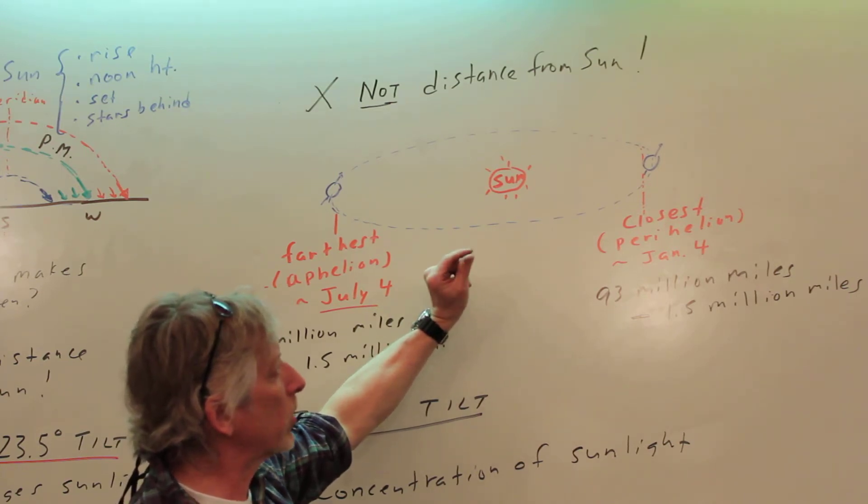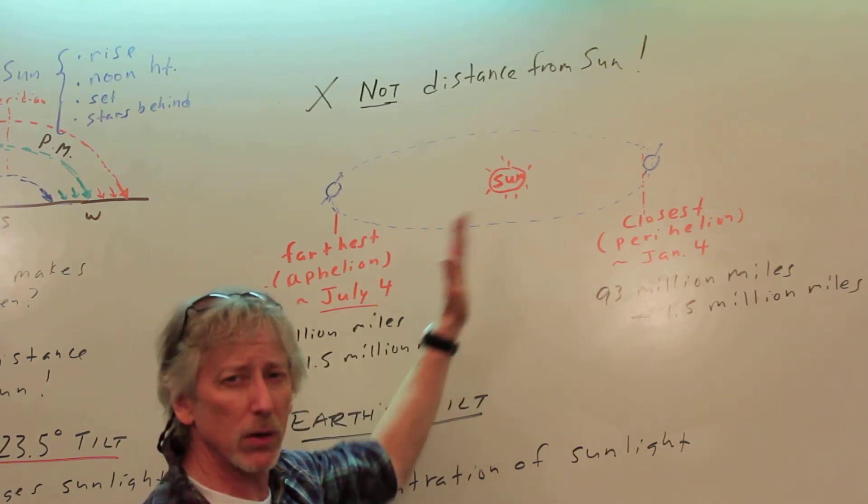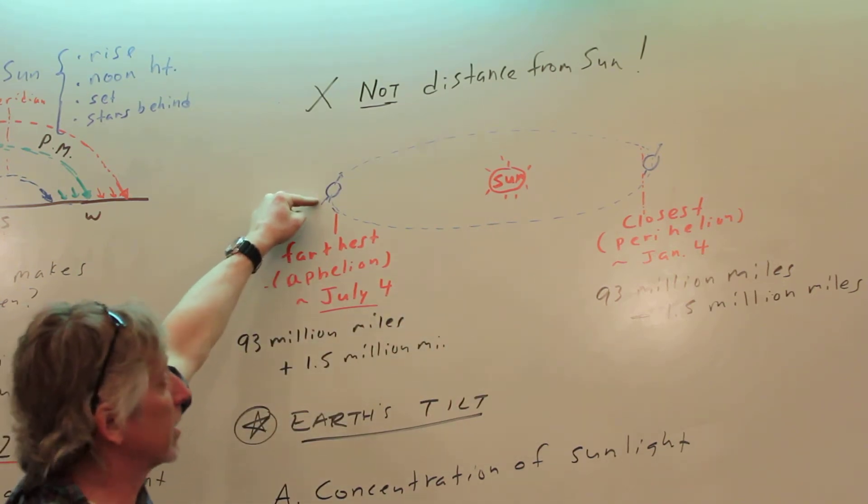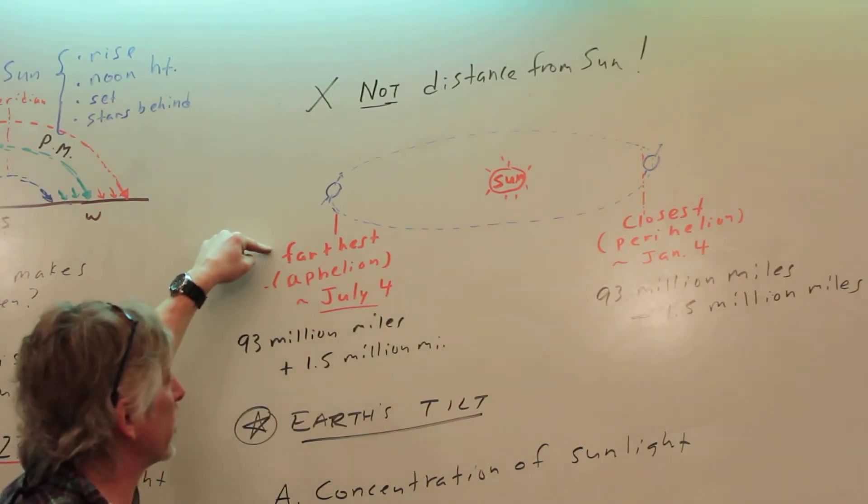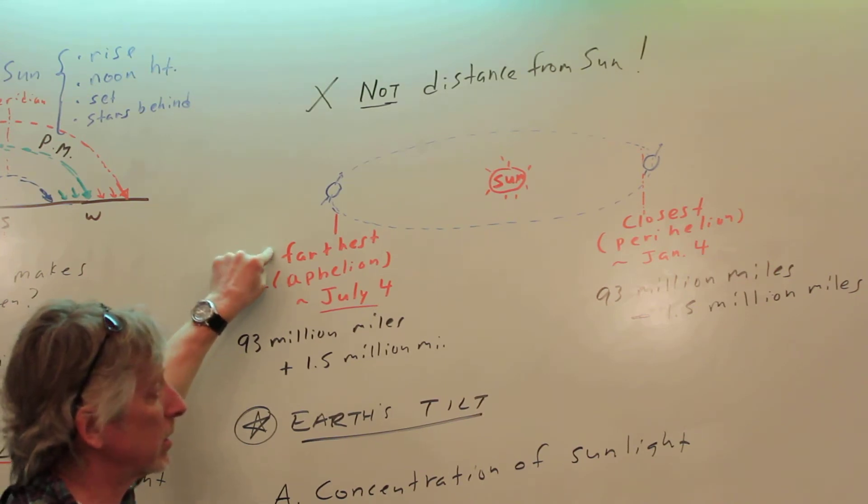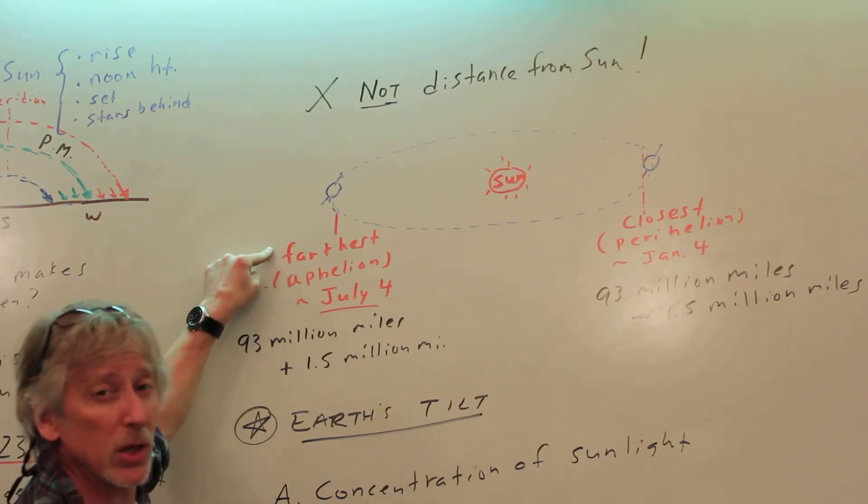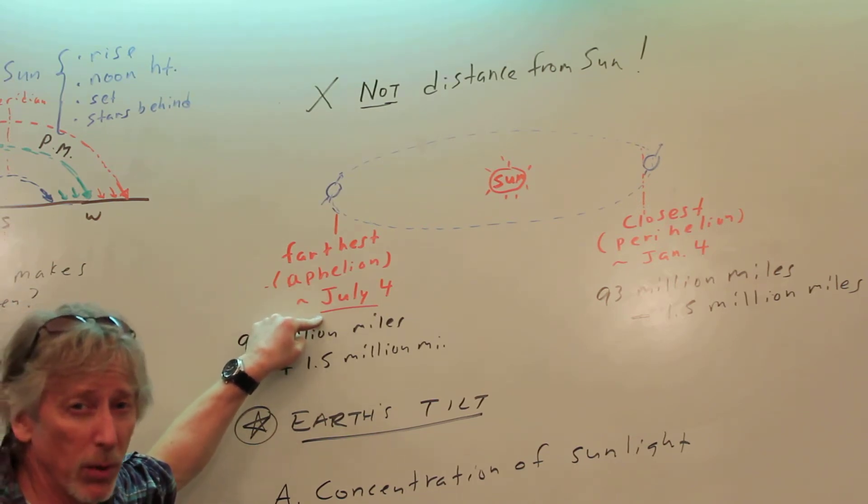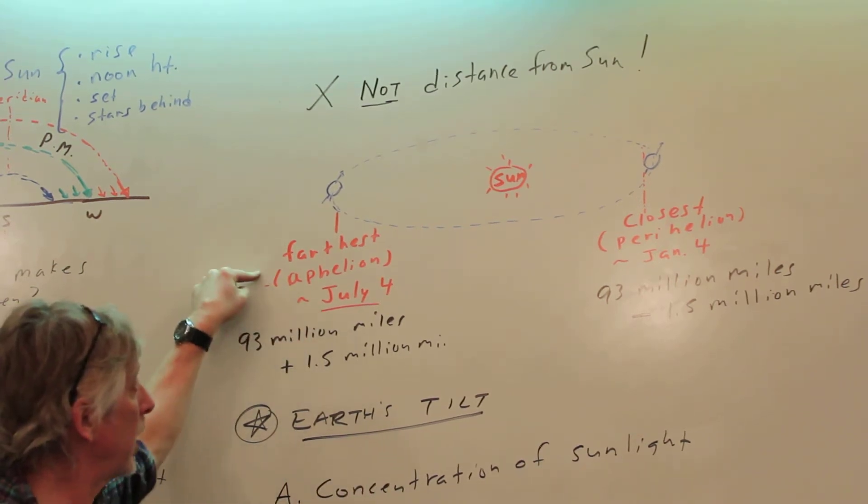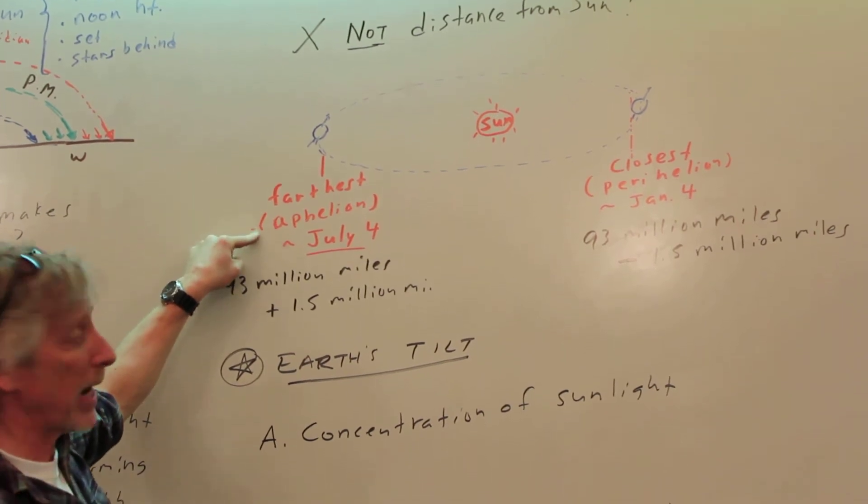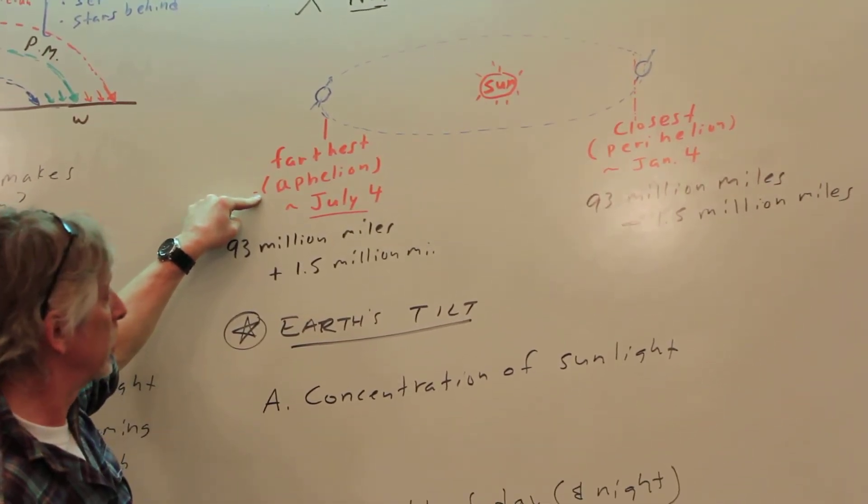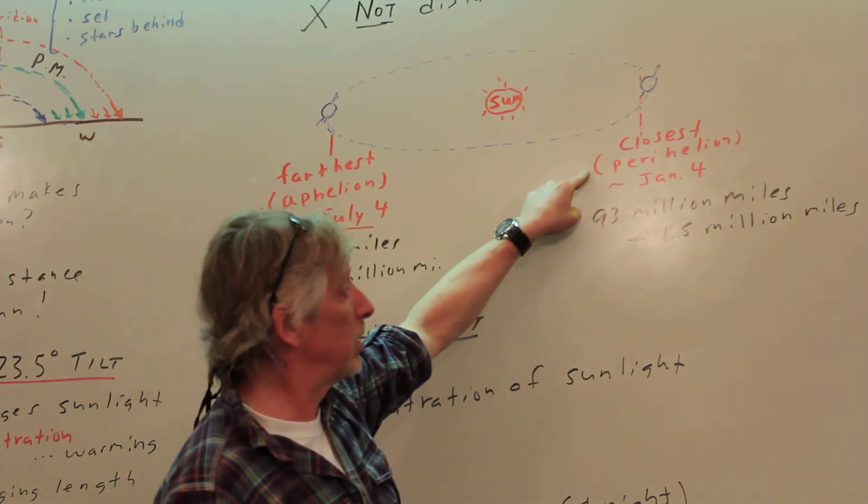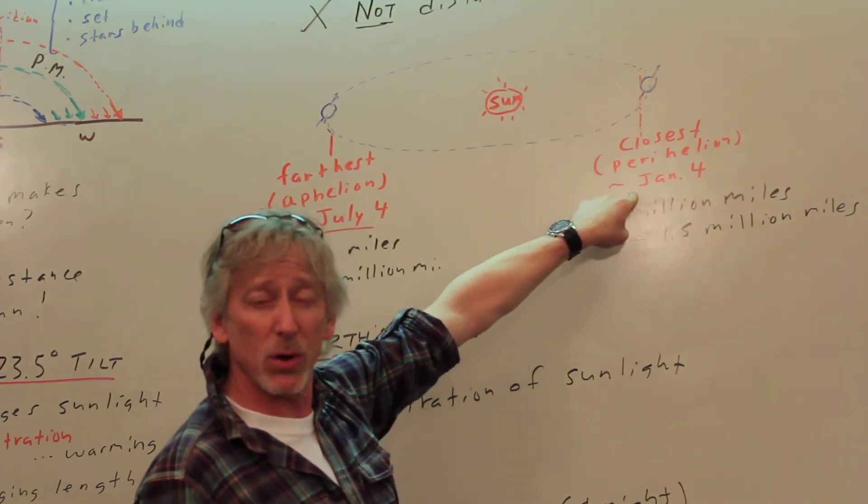And so while Earth can be a little closer and a little farther from Sun, in fact it's not much. And the surprising thing is we're farthest from Sun not in our winter, but in the Northern Hemisphere's summer. In fact, on July 4th, when you have your barbecue, there you go, tell your friends, hey, we're farthest from Sun. We're at aphelion. And then if we go over here, closest, perihelion, that's around January 4th.